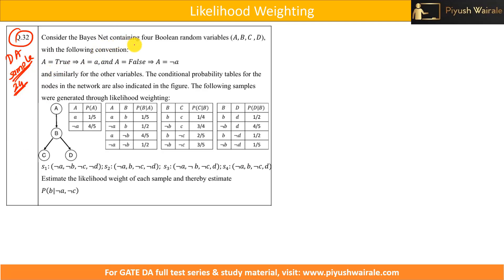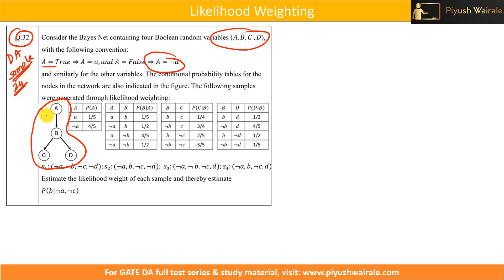Consider a Bayesian network containing four Boolean random variables A, B, C, D. A network diagram is given to us. So A equals true and negation of A will be false — remember this point. The probability is given to us with respect to this particular network. This is basically the CPT — conditional probability tables — and similarly for other variables, the CPT for the nodes in the network are also indicated in the figure.